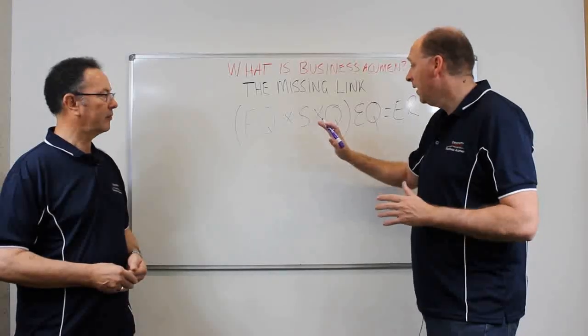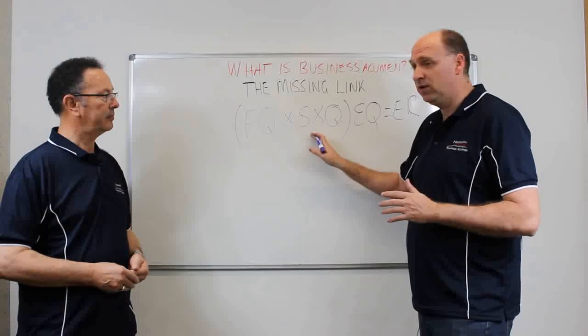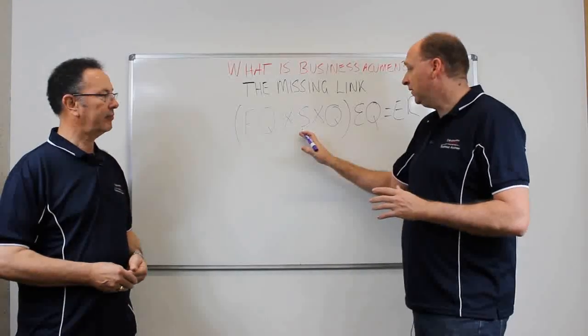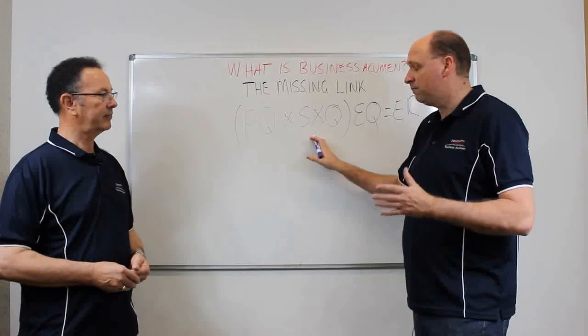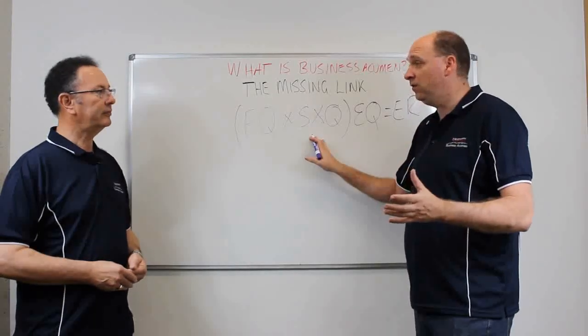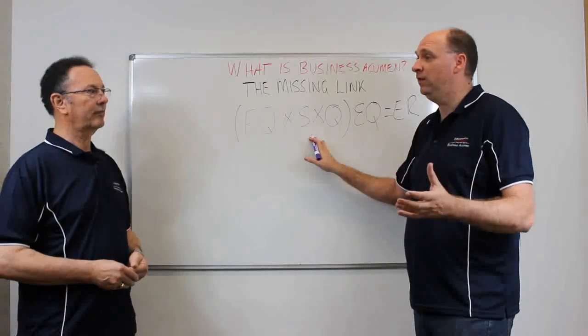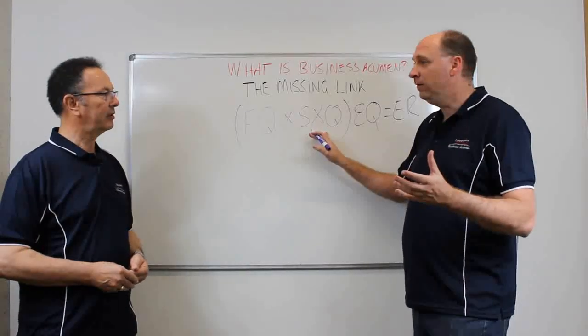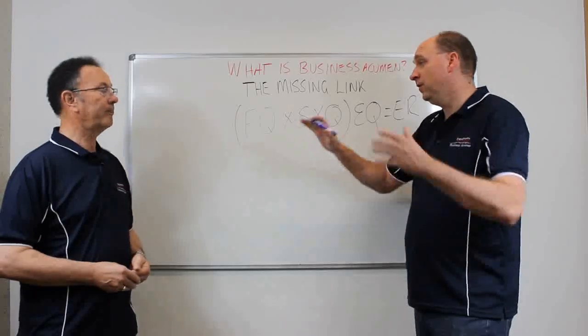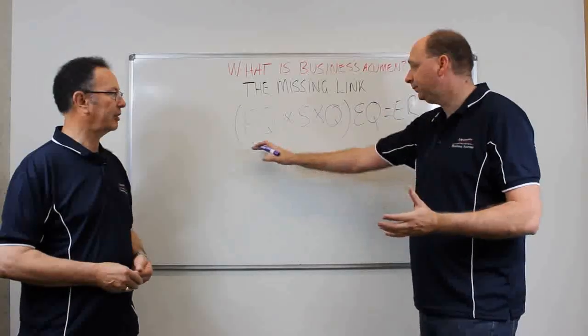Then times by your strategic execution. There's research to show that up to 95% of employees, depending on which research you look at, don't know or don't understand the strategy of a business. That's quite devastating. So you could be executing well, but are you executing within the context of the strategy?